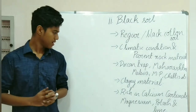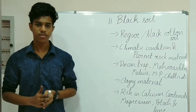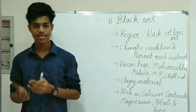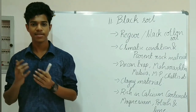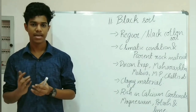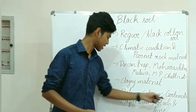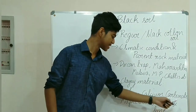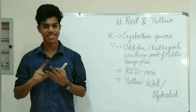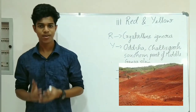Another important feature of black soil is that it is made up of clay material. Since it is made up of clay, it has extreme potential to hold moisture. Black soil is rich in calcium carbonate, magnesium, potash, and lime.